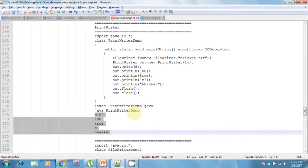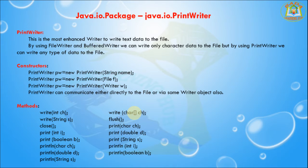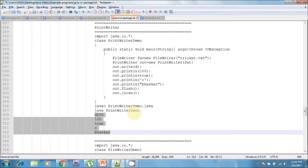Now I am going to discuss the difference between write(100), print(100), and println(100). In the case of write(100), the corresponding character 'd' will be added to the file.